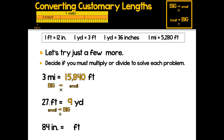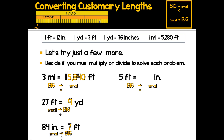84 inches is how many feet? We're going from super tiny inches to bigger feet — small to big means divide. Take 84 inches divided into groups of 12, since there are 12 inches in a foot: 84 divided by 12 equals seven feet. Next: five feet is how many inches? Feet are bigger, inches are smaller — big to small means multiply. Five times 12 equals 60 inches. Eight yards is how many feet? Yards are big, feet are smaller — big to small means multiply. Eight times three equals 24 feet.